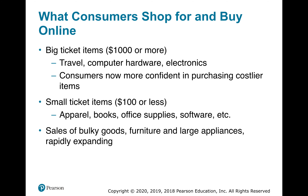What consumers shop for and buy online: big ticket items of $1,000 or more include travel, computer hardware, and electronics. Consumers are now more confident purchasing costlier items — whereas maybe 10 years ago people weren't buying such big ticket items online. Reviews have had a really big play into that, where you can go online and see what other people are saying. In years past, if you went to a store, you might just have a salesperson's opinion compared to many opinions that are out there.